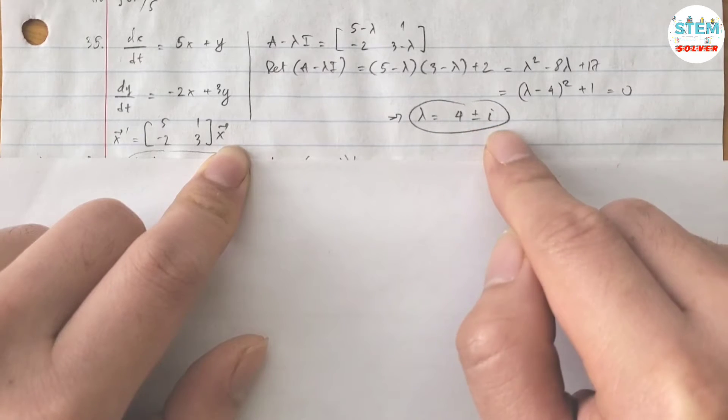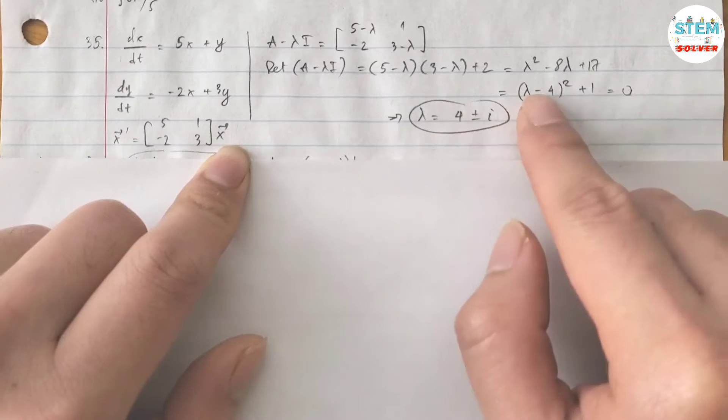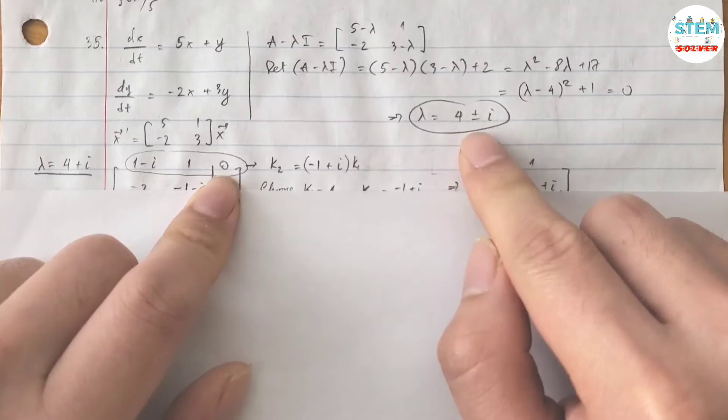So here's the complex eigenvalues. So let's take a look at the case when lambda equals 4 plus i.